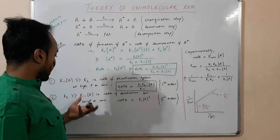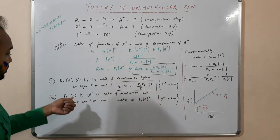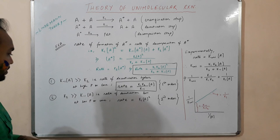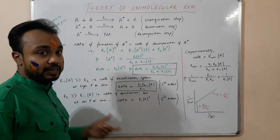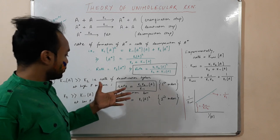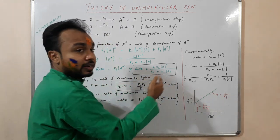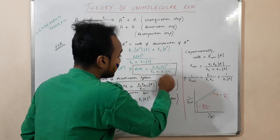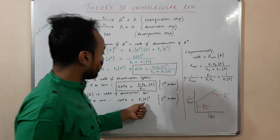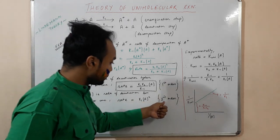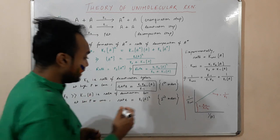At low pressure or low concentration, the rate of product formation is higher than the rate of deactivation. So K₂ is much greater than K₋₁[A], and we neglect the K₋₁[A] term. This gives rate equal to K₁[A]², which follows second-order kinetics.